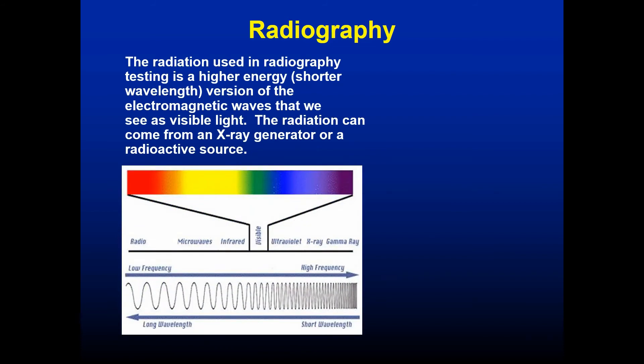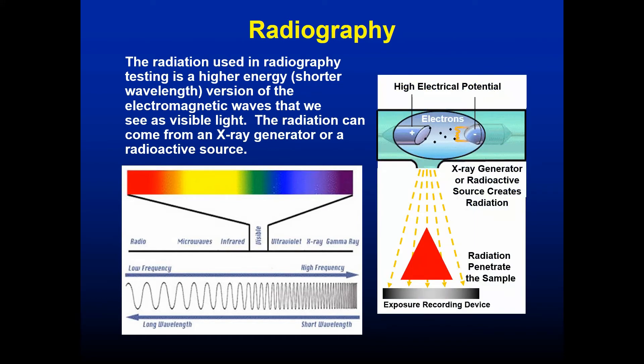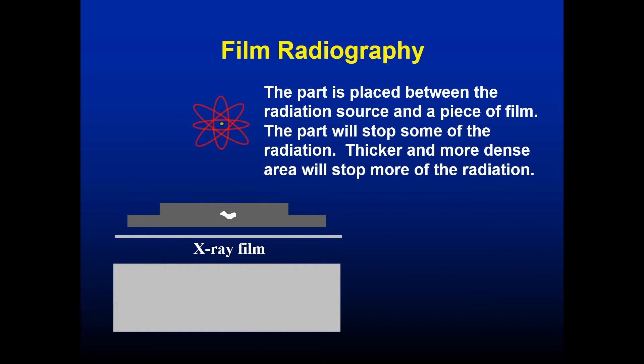Radiography is essentially X-ray — just like in the medical field. The radiation used is higher-energy, shorter-wavelength electromagnetic radiation. We have a huge spectrum from radio waves all the way to gamma rays. In industrial inspection, gamma rays can be used on materials — though not on people. X-rays pass through solid material and expose film on the other side. The part is placed between the radiation source and a piece of film. Thicker, denser areas stop more radiation.